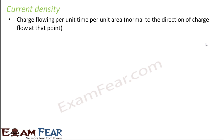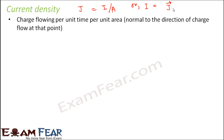Current density, denoted by J, is charge flowing per unit time per unit area, normal to the direction of charge flow at that point. Importantly, current is a scalar quantity but current density is a vector quantity. The relationship between them is: current I equals J dot A — the dot product of the current density vector and the area vector.